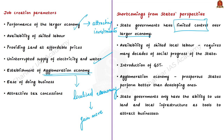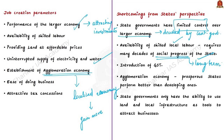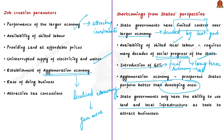State governments have limited control over the larger economy because major economic policies are decided by the central government. Availability of skilled local labor is a function of many decades of social progress and cannot be reshaped immediately. After the introduction of GST, state governments lost their fiscal autonomy and have no power to provide tax concessions to businesses, which play an important role in attracting investments. In agglomeration economy, already prosperous states perform better than developing ones. So currently, states only have land and local infrastructure as tools to attract businesses.